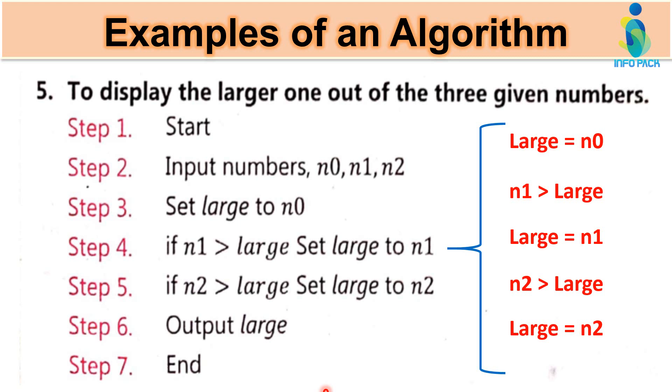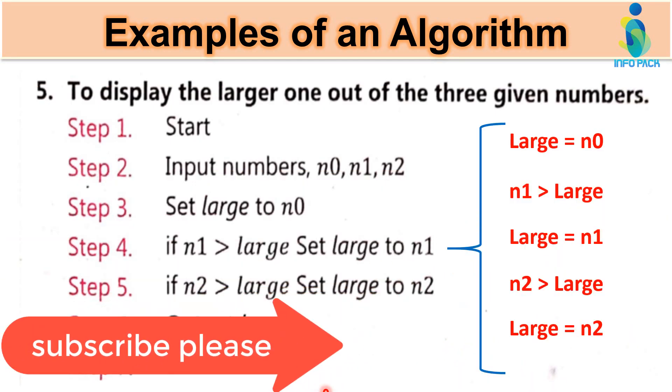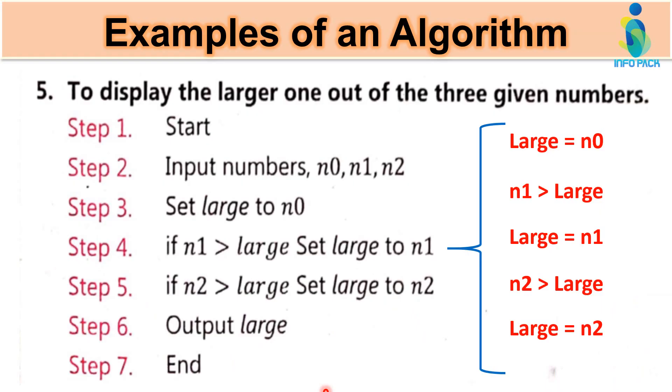And n2 ko ab hum kis se compare kare ke kis se condition check kare ke. N2 is greater than large. If this condition is true then kya karna hai? Large is equal to n2. Hum large ke inder n2 ko store kawa. I am explaining it again. We have three given numbers. We had to write the algorithm for three given numbers. We had to write that input.